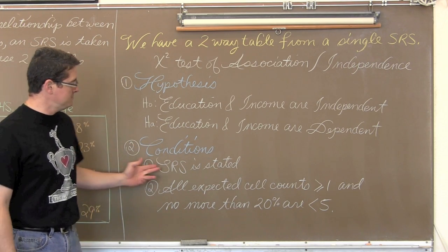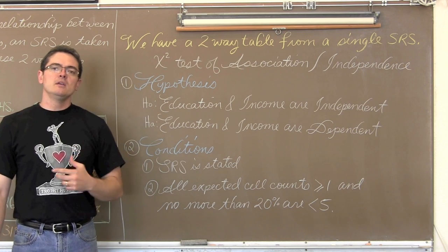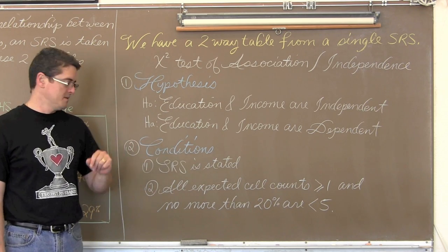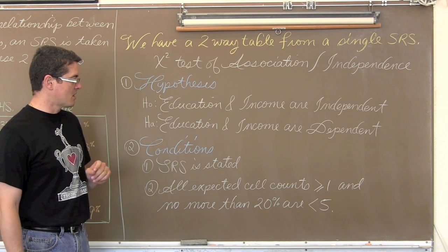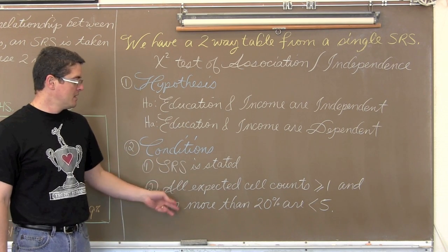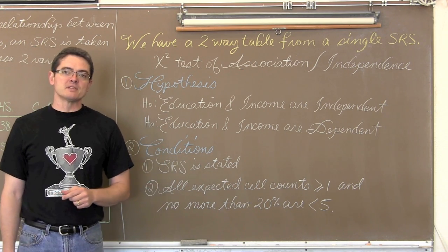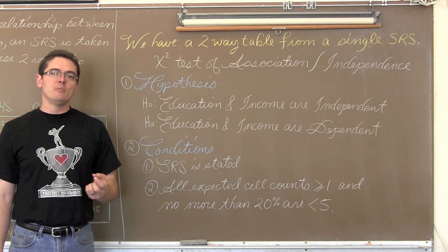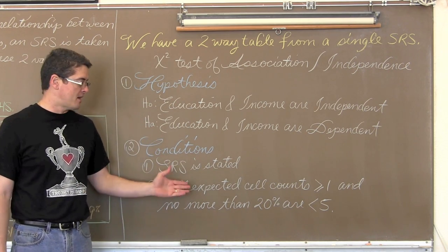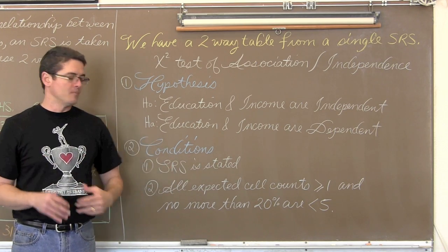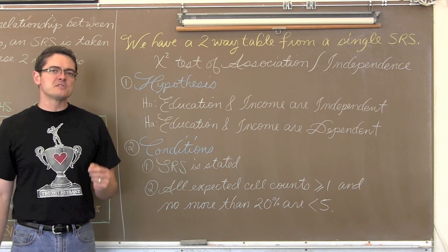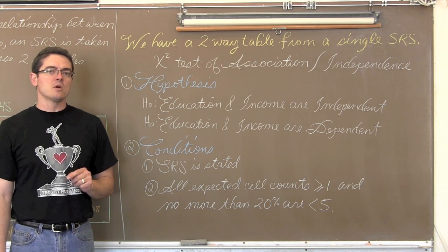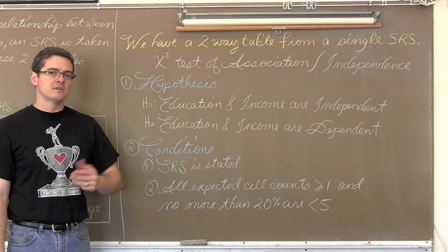Our conditions, SRS, we have randomly selected people for this study through an SRS, just one. And all the expected cell counts are greater than or equal to one. And no more than twenty percent are less than five. Now again, there is a formula to do this by hand, but we will be allowing the calculator to define these values in bulk for us, for the entire table. So I have written this check, but I will reference it later on in the problem after we have actually run the chi-square test and allowed the calculator to give us those values.